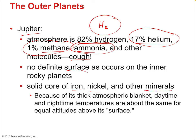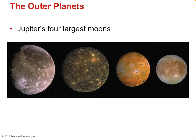Because of Jupiter's thick atmospheric blanket, daytime and nighttime temperatures are about the same for equal depths into the cloud layer. Jupiter is famous for its moons, and it has four very large ones. The largest — Ganymede — is larger than Mercury, making it a moon bigger than a planet. The second largest is Callisto, then Io, which is famous for its volcanoes, and Europa, famous for its frozen layer of ice.